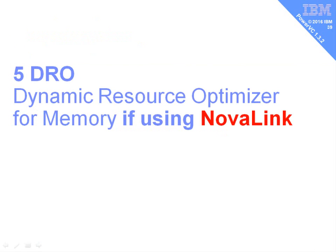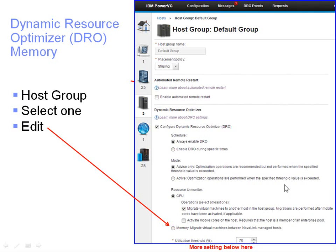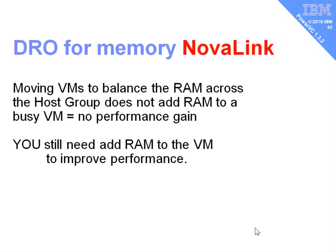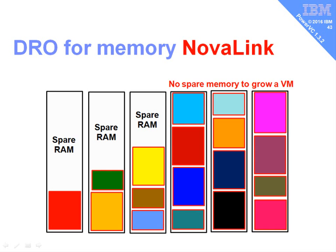Number five: the Dynamic Resource Optimizer. In the past it balanced CPU load across a group of machines; now it also controls memory, but only in NovaLink mode. In the host group settings for DRO there is now an additional button for memory: 'migrate virtual machines between NovaLink managed hosts.' However, simply moving a virtual machine to balance RAM across machines doesn't improve performance — the VM still has the same amount of memory. To improve performance you need to add memory to the virtual machine that is memory-constrained.